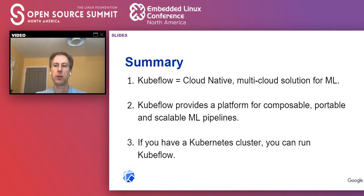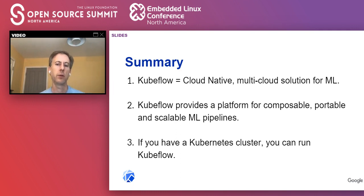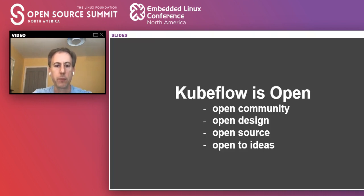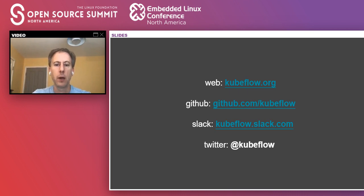To summarize what we've seen so far: Kubeflow is a cloud-native, multi-cloud solution for ML. It allows you to build pipelines, and if you have Kubernetes, you can run Kubeflow — it's a platform that runs nicely on top of Kubernetes. Kubeflow is an open community with ideas from many different places. If you want to find out more, kubeflow.org is probably the best place to start — it has links to all the other resources.